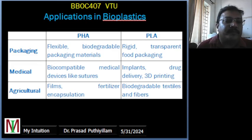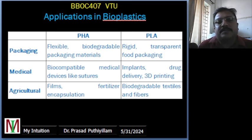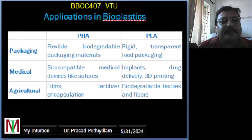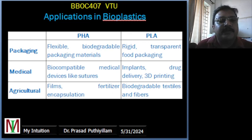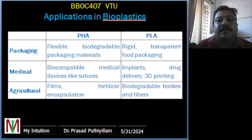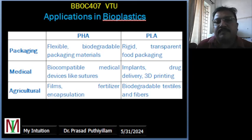Applications of PHA: polyhydroxyalkanoates are used in a variety of applications due to their biodegradability and flexibility. In packaging, PHB is used to make biodegradable plastic bags which decompose naturally, reducing environmental waste. In the medical field, PHBV is utilized for surgical sutures and drug delivery systems due to its biocompatibility. Additionally, PHAs are employed in agriculture for products like biodegradable mulch films and controlled-release fertilizers, minimizing environmental impact while supporting agricultural productivity.